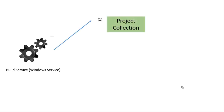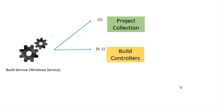Build Service is a Windows Service that is configured for only one project collection. So we can only configure Build Service for one project collection — we can't configure Build Service for multiple project collections. Also, we can only have one Build Controller per machine, so we can't install multiple Build Controllers on the same machine.